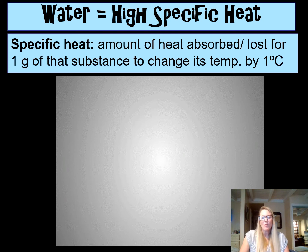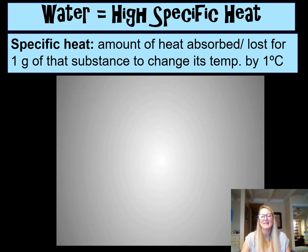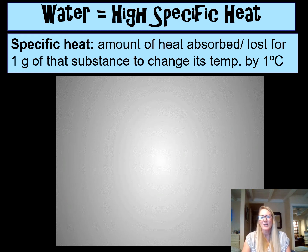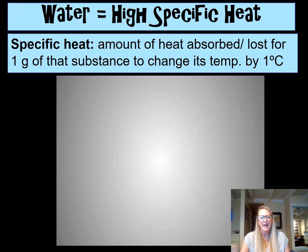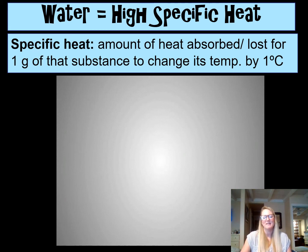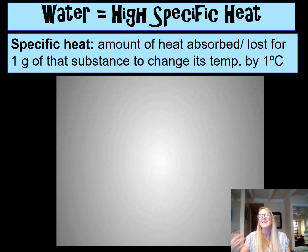Another property you should know about water is that it has a very high specific heat. Specific heat is the amount of heat needed to raise one gram of a substance by one degree Celsius. In chemistry, you might have done a lab using a calorimeter — measuring the specific heats of different materials by looking at how much energy it took to move the temperature one degree Celsius. It's usually a favorite lab for students in chemistry.